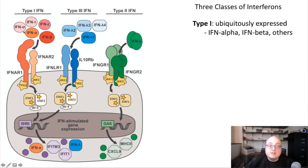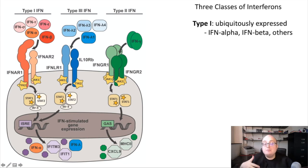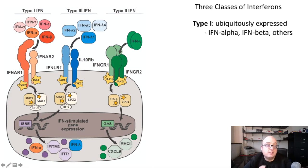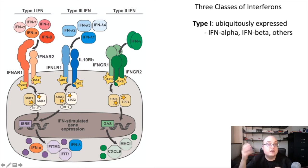The other important thing about type 1 is that the type 1 interferons are ubiquitously expressed basically in all cells in the body — all nucleated cells, so everything except red blood cells. This is important because type 1 interferons are really the prototypical innate antiviral cytokine. We need type 1 interferons in all of our cells to protect them from viral infection. Animals and humans lacking type 1 interferon expression are really immunocompromised and susceptible to a broad variety of viral diseases.